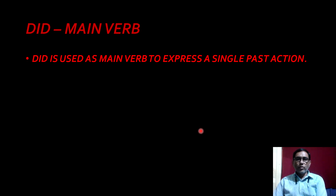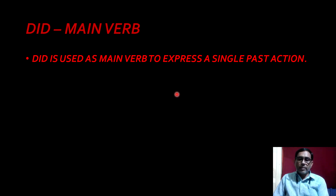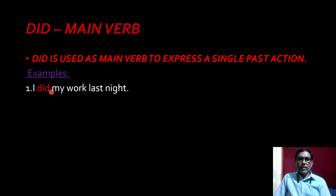Today, let's learn 'did.' Did as main verb. Did is used as main verb to express a single past action. Why do we use did? To express a single past action as main verb. For example, I did my work last Sunday. Here, the verb 'did' is used as main verb.